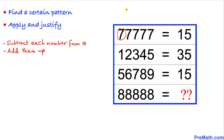Let's get started with the first row. The number 7 can be written as 10 minus 7, which gives us 3. Likewise, 10 minus 7 is 3, and this repeats five times. Adding them up: 3+3+3+3+3 gives us 15, which confirms our answer for the first row.